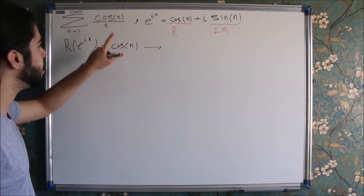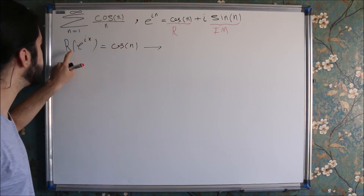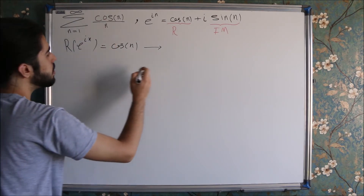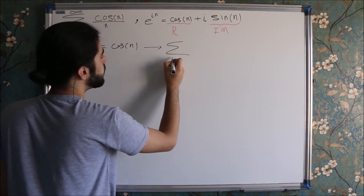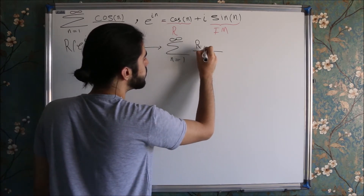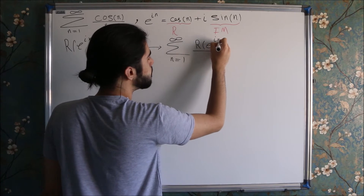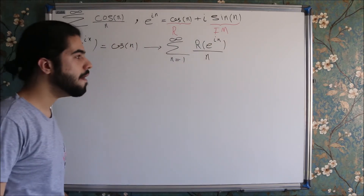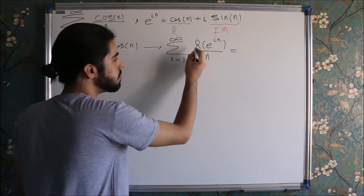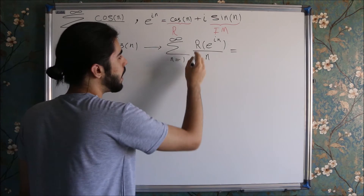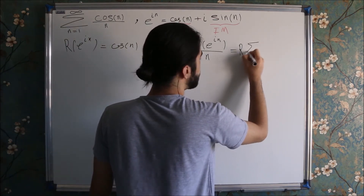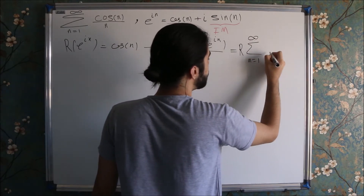So now we can write: the real part of e to the power of i times n is equal to cosine of n. We found a replacement for cosine of n in our numerator, so we can plug this one instead of cosine of n. If we put this here, we will get our new infinite sum written in a new form.